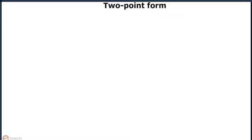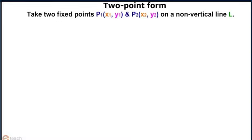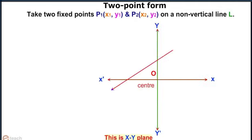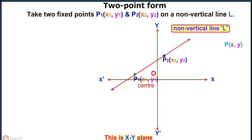Two-point form of line. Let us take two fixed points P1 which is x1, y1 and P2 x2, y2 on a non-vertical line L. Let us take another point P x, y which is an arbitrary point on line L.